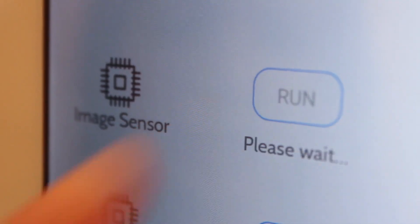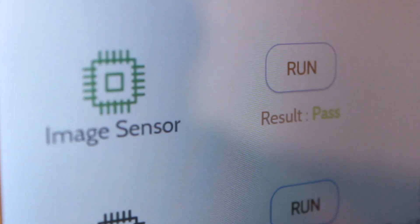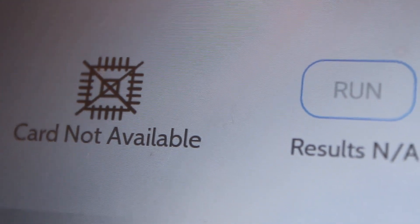To test the card, press run. The test could take several minutes, but should come back as pass and the icon will change to green. If the card is grayed out or it shows card not available, confirm that the card is properly installed and reboot the panel again. And that's it.